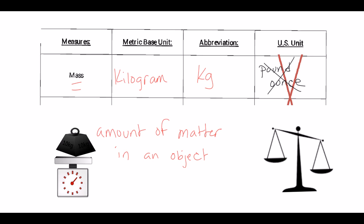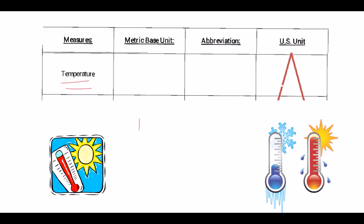Temperature is going to talk about how hot or cold something is. But as we get more into chemistry, we're going to find out that cold is actually a relative term and we're only ever measuring the amount of heat. The metric base unit for temperature is actually Kelvin. This is abbreviated with a capital K.